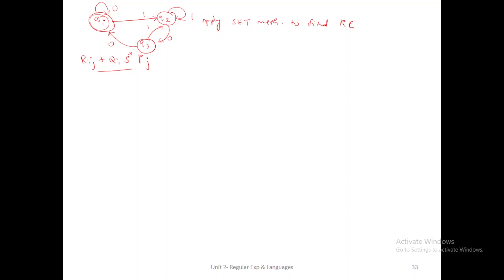In the given problem, the source node is also the destination node, so we apply the Case 2 concept for prediction of the regular expression. Step one: write the source node. Here the source node is Q1 and the destination node is also Q1. The intermediate nodes are two nodes, so you can eliminate either Q3 or Q2.